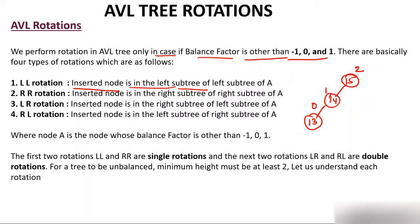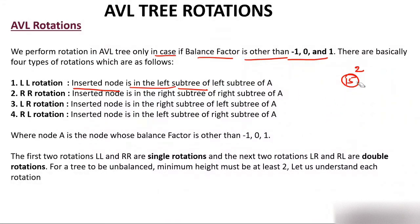Since the balance factor has become other than minus 1, 0, and 1, this tree is not balanced and we have to rotate. Which rotation? LL — left of left. In LL rotation, we rotate it clockwise. A is the node whose balance factor is destroyed.